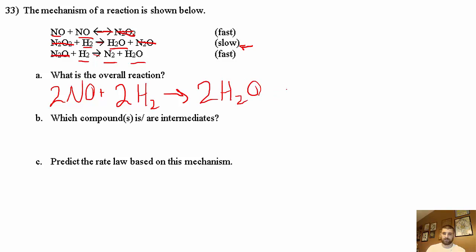That is our overall reaction. Which compounds are intermediates? We already figured that out—N2O2 was an intermediate and so was N2O, so those two things were intermediates.